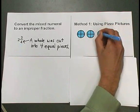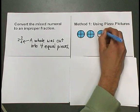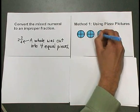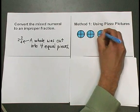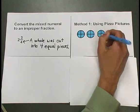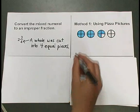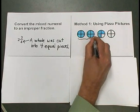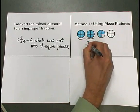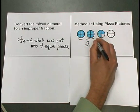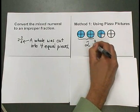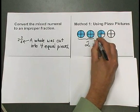So I'm going to shade 1, 2 pieces, 3 pieces, out of 4 in another whole pizza. So what I've shaded represents 2 whole pizzas and 3 fourths of another pizza.